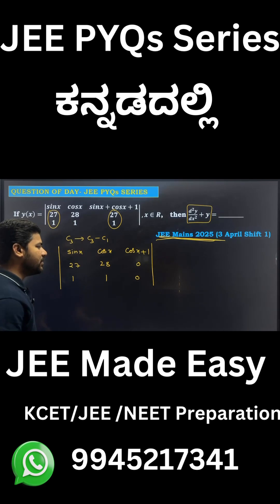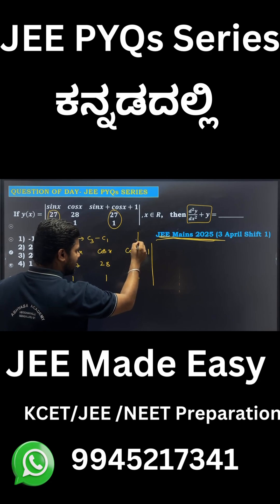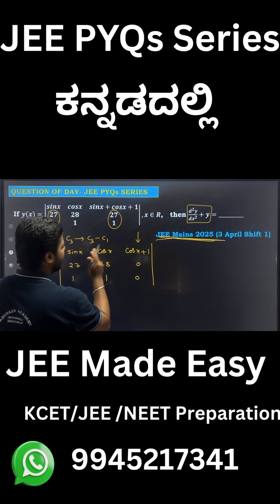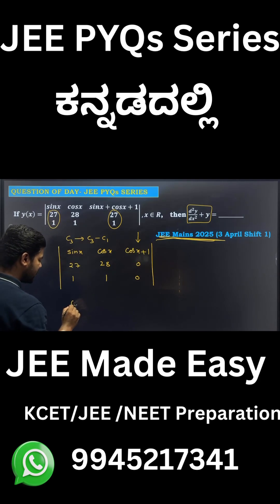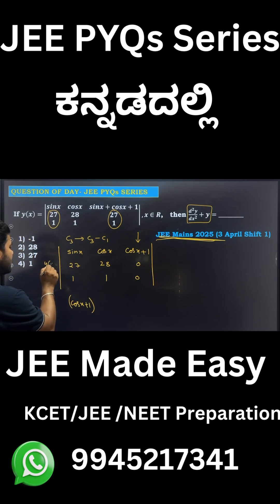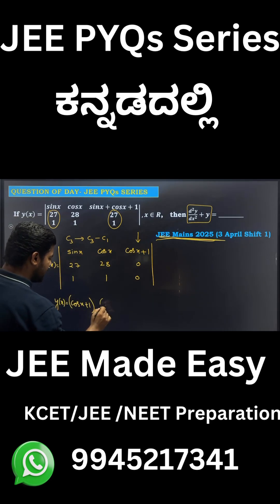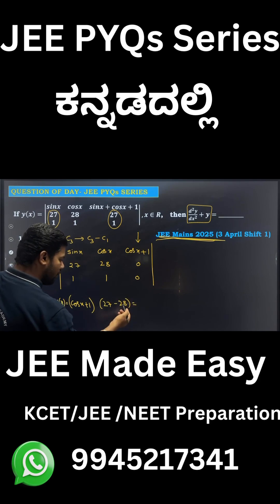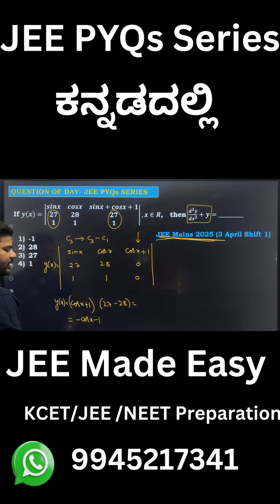Now it is easy to expand because you have made two elements 0. I am going to expand this determinant by taking the third column. By cofactor expansion — plus, minus, plus — this is plus, that is cos x plus 1, cos x plus 1. So this is your y(x). y(x) equals this into this minus this, which is 27 minus 28, giving you minus 1. If you multiply this minus 1, then your final answer is minus cos x minus 1.